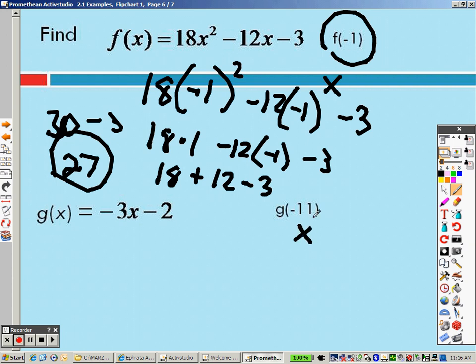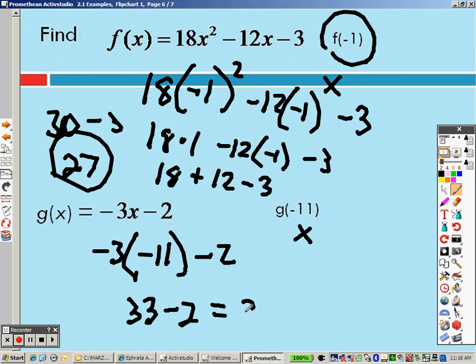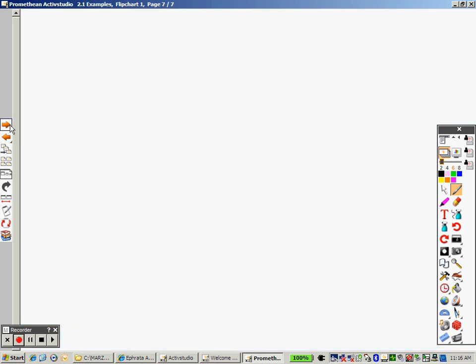This is saying everywhere there's an x, put in a negative 11. So negative 3 times negative 11 minus 2. That's like saying 33 minus 2, which is 31, is your answer. So if you have any other questions or concerns on 2.1, please let me know.